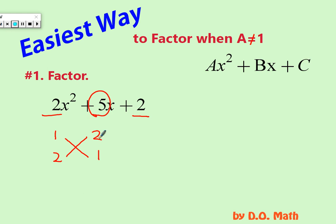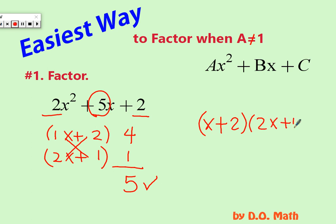So 2 times 2 is 4, 1 times 1 is 1, and when you add these 2, you get 5. So then you're done. So how do you write your answer? Here's 1x plus 2 for your first factor and then 2x plus 1. x plus 2 and 2x plus 1 is your final answer. Isn't that easy?